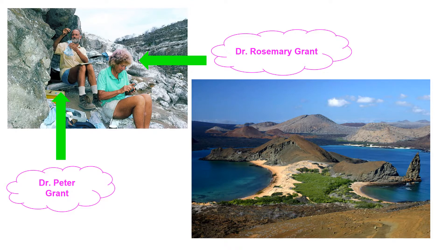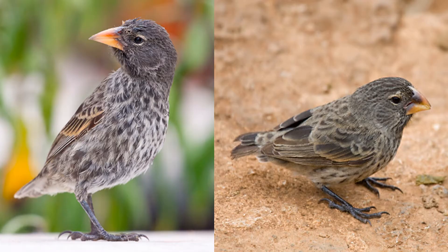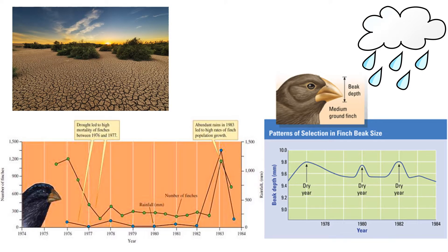Two scientists named Peter and Rosemary Grant wanted to learn more about this idea of evolution, so they performed a 30-year study of two species of finches native to the Galapagos Islands in 1972. Each year, the pair observed the changes in body size, beak size, and beak shape of the medium ground finch and the cactus finch. In addition, the Grants monitored environmental factors over the years in hopes of understanding why these finches were changing or evolving.